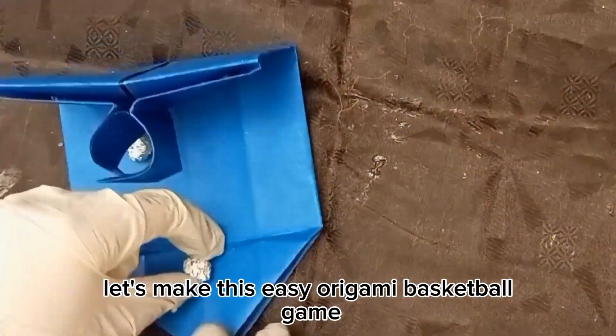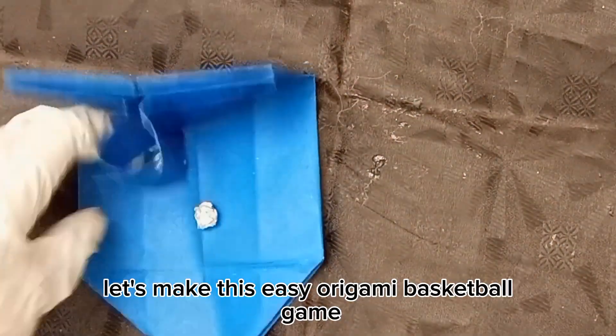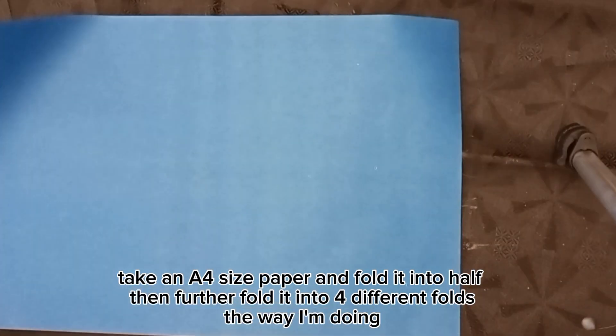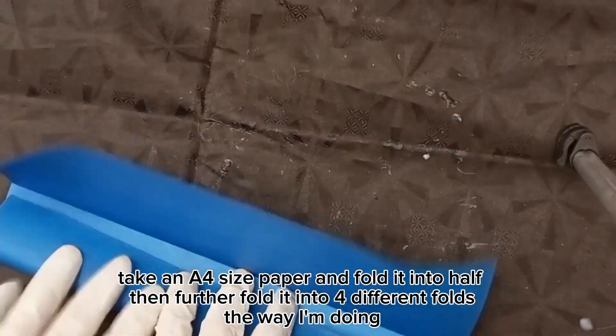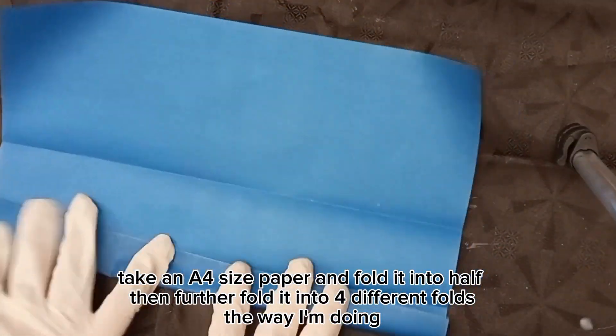Let's make this easy origami basketball game. Take an A4 size paper and fold it into half. Then further fold it into four different folds the way I'm doing.